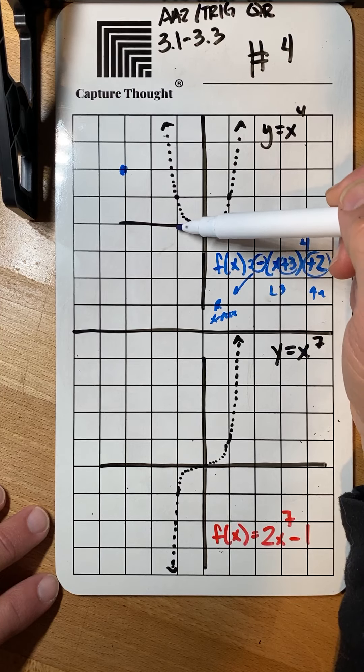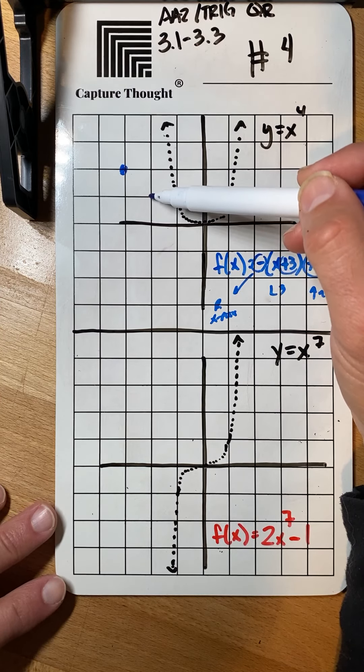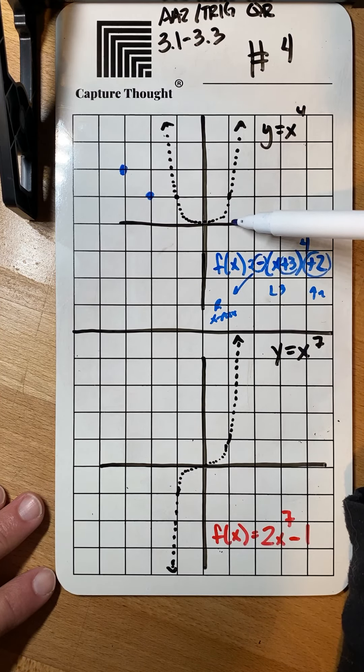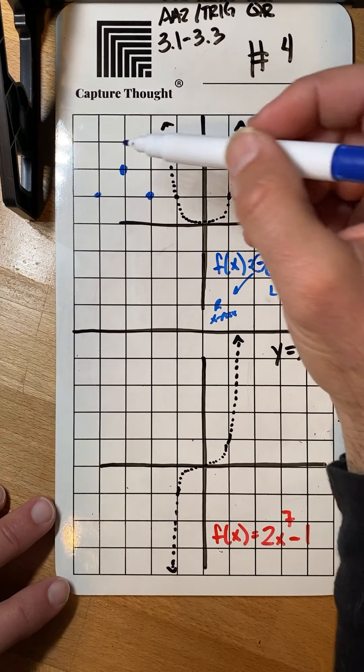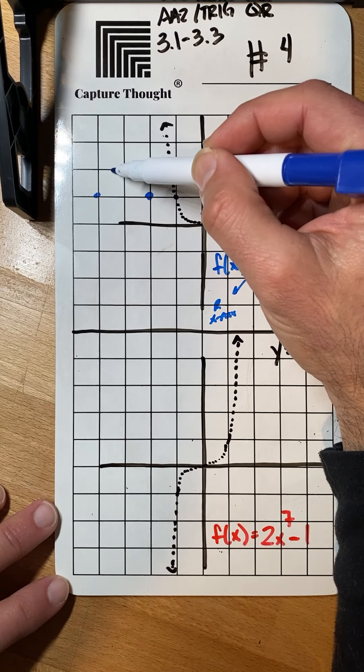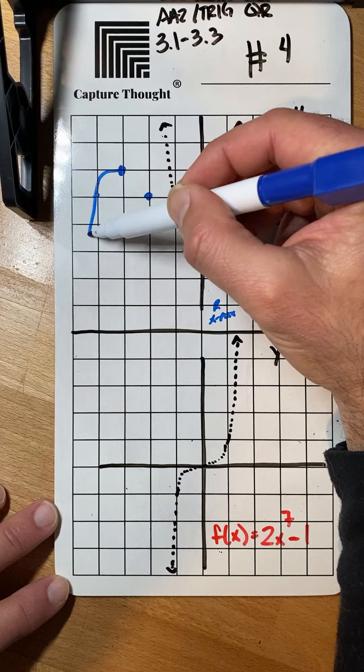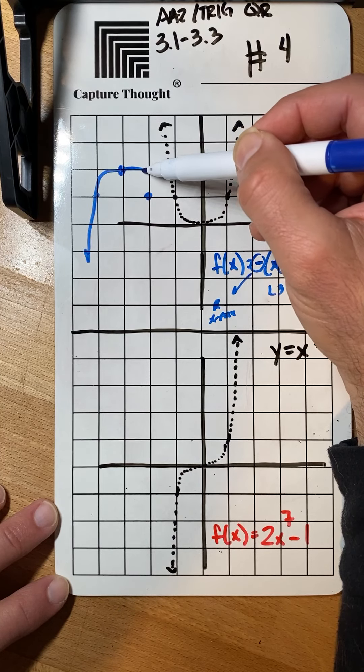I'm also noticing that if I go over one and up one then that point is on my graph, and then right one and up one that point is on my graph. From here I'm just going to do my best to sketch the quick version of what this might look like.